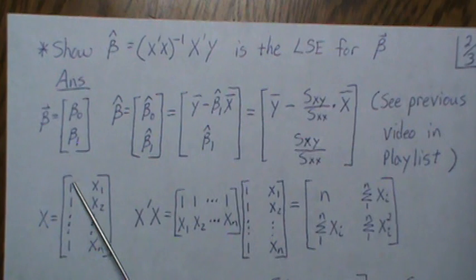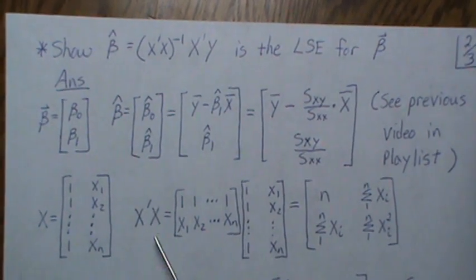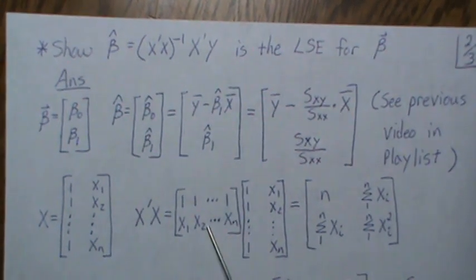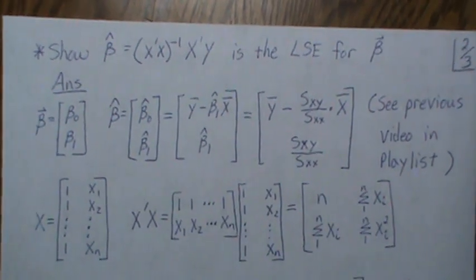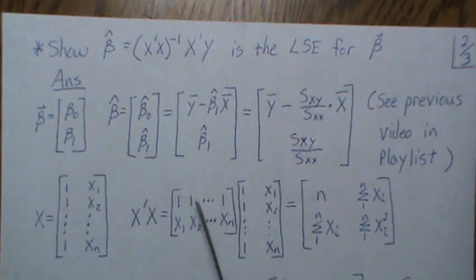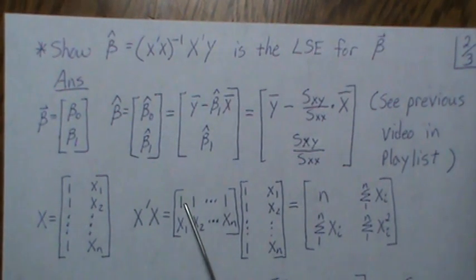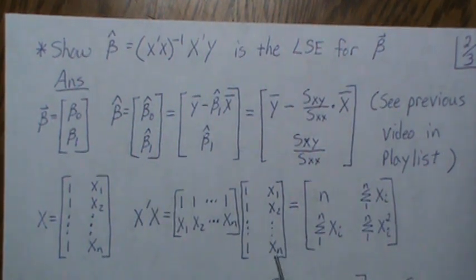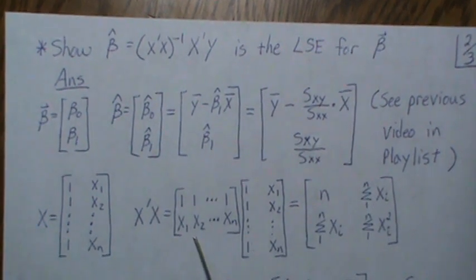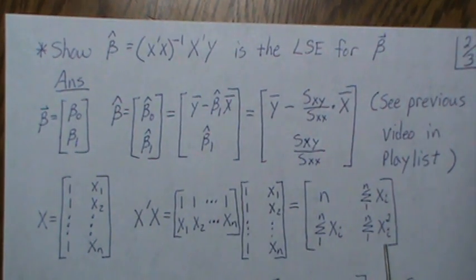As a reminder, X has a column of ones and a column of the x's x1 through xn. So X-transpose times X: we take the transpose of X and matrix multiply by X. The first row times first column gives 1 times 1 summed n times, which is n. The first row times second column gives the sum of the x's. The second row times second column gives the sum of x-squared.